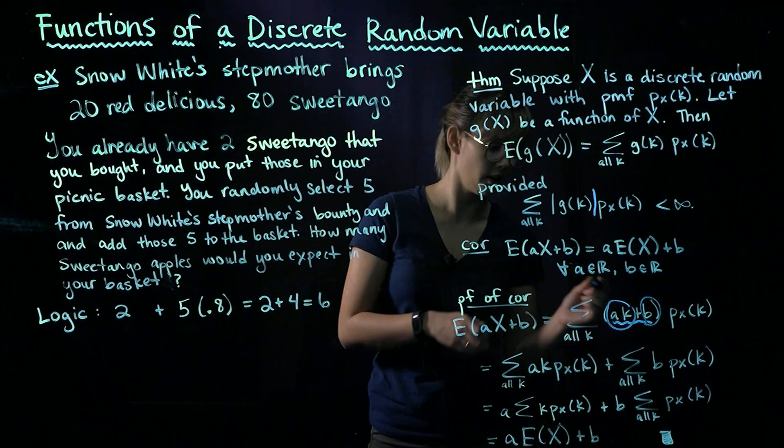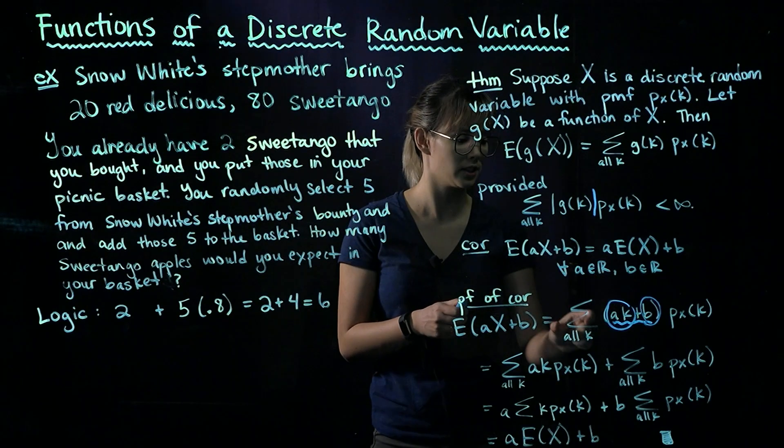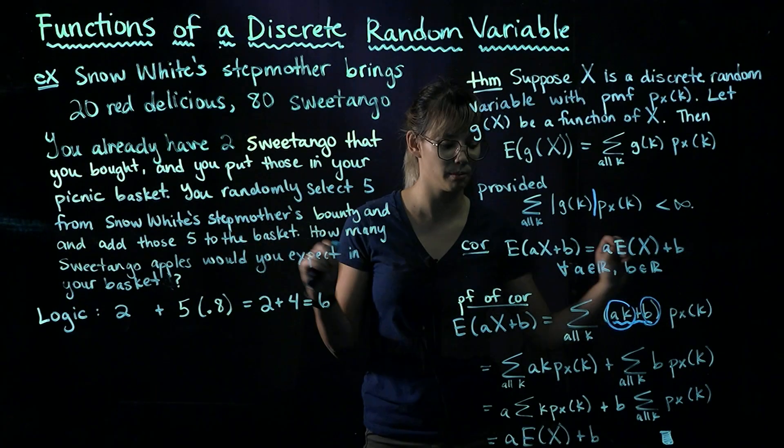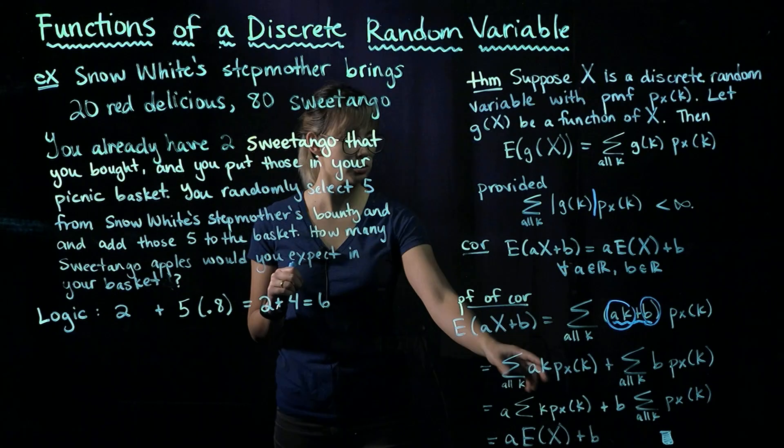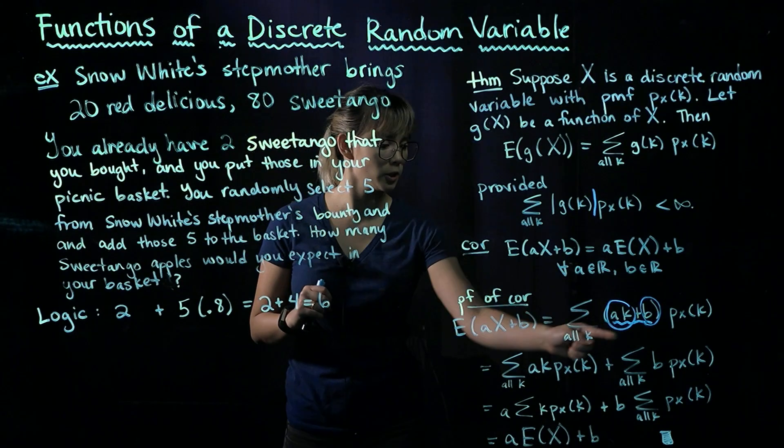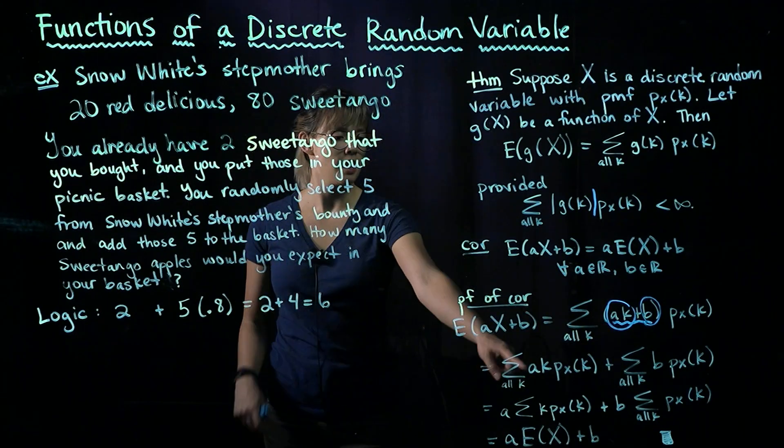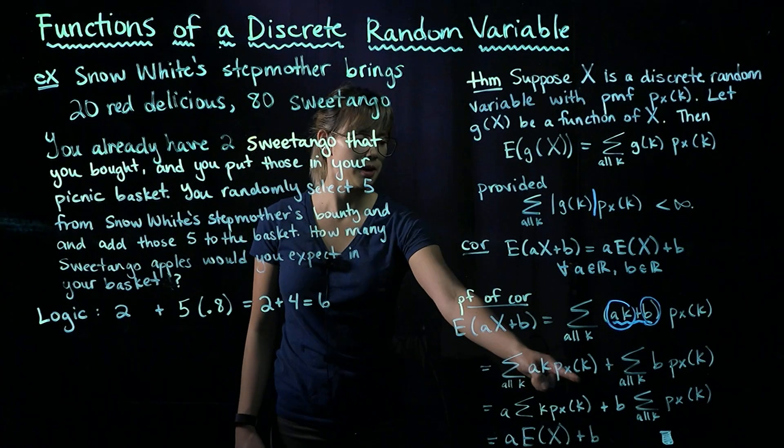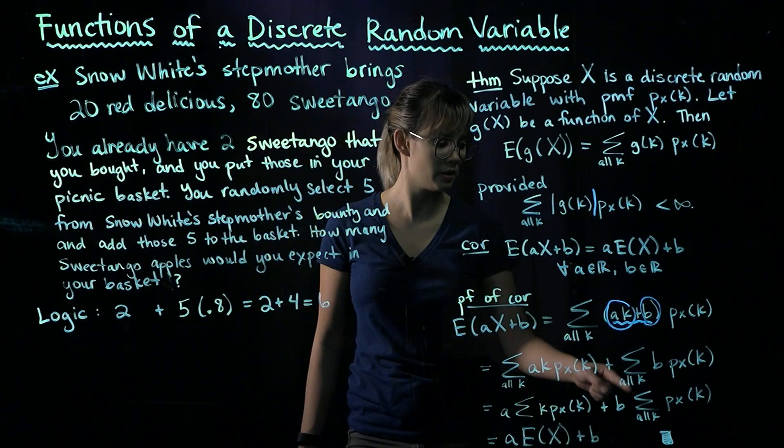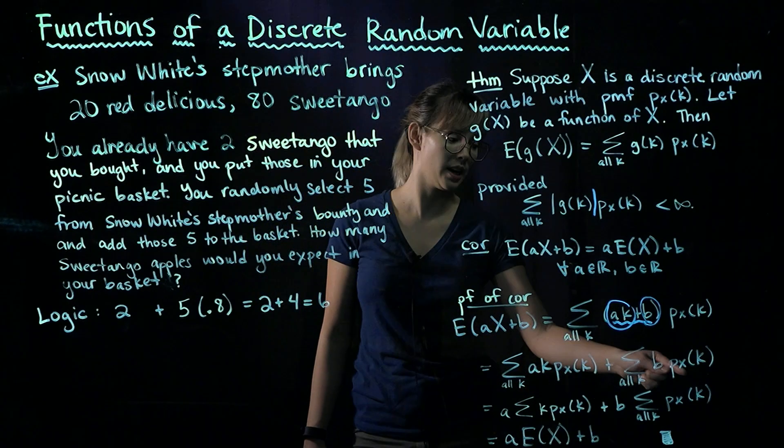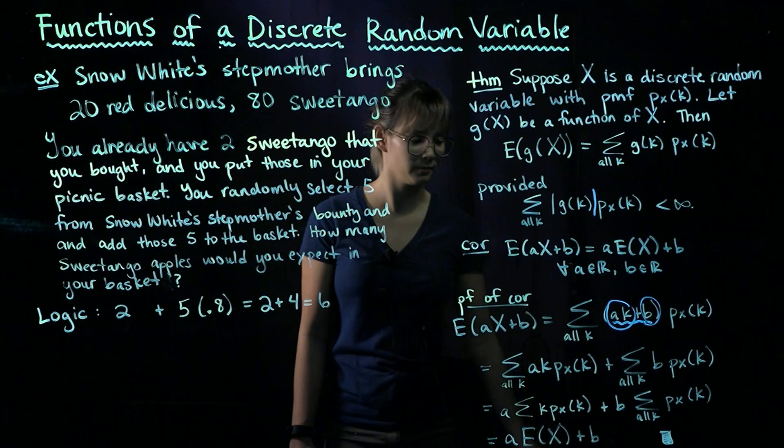Since we have a sum of a sum, we can split that into two sums—that's fair game. So that's what we have going on here. Here's the first bit: the sum over all k, a times k times the PMF, plus the sum over all k, b times the PMF.